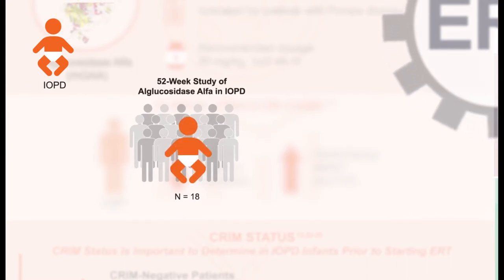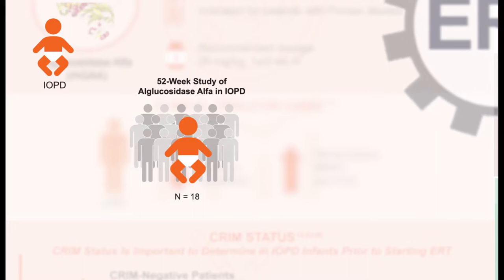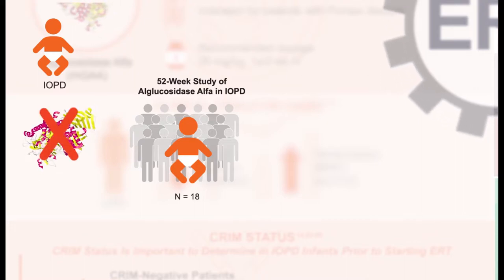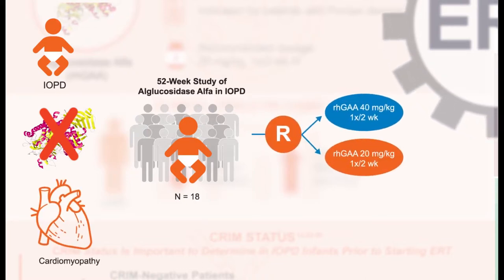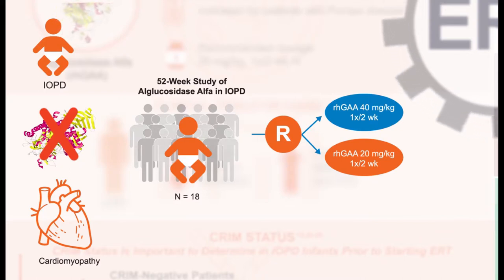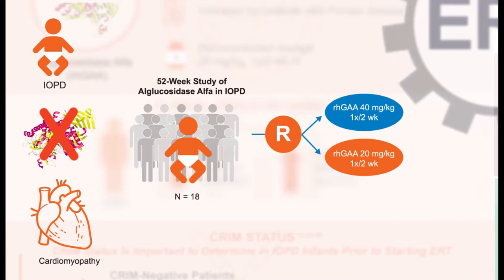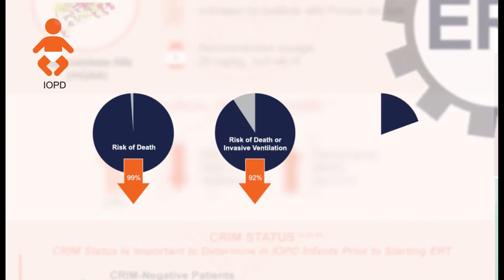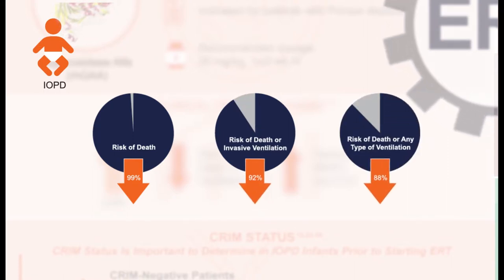The approval was based on a 52-week study of alglucosidase alfa in infantile-onset Pompe disease. There were 18 infants, all diagnosed at six months or younger, all with severe GAA deficiency and cardiomyopathy. Randomization was to two doses — 20 mg/kg or 40 mg/kg every two weeks. After 52 weeks, all patients survived to 18 months of age. Treatment with alglucosidase alfa reduced the risk of death by 99%, risk of death or invasive ventilation by 92%, and risk of death or any ventilation by 88%.